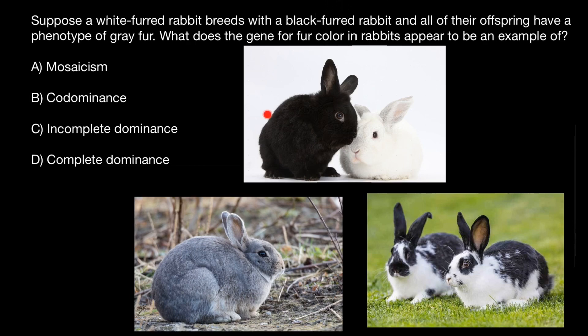Why am I saying that black is incompletely dominant over white, and not white incompletely dominant over black? Because white actually is not a color — it is the absence of color, which we perceive as white. But actually, if we take just one hair and magnify it under the light microscope, we would see that each hair is going to be translucent or transparent, but due to scattering of the light, we perceive such a rabbit as white.